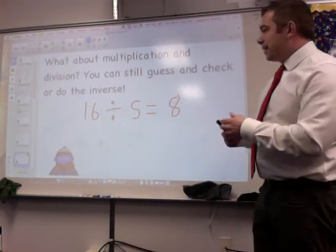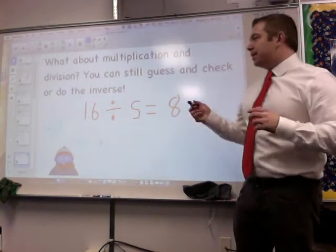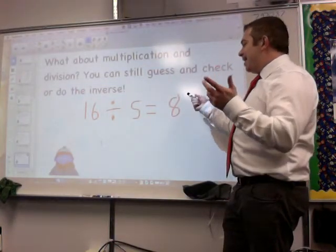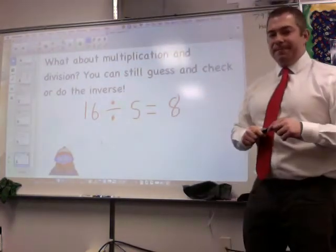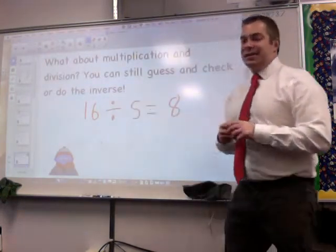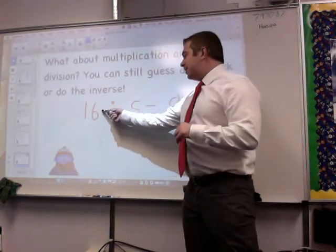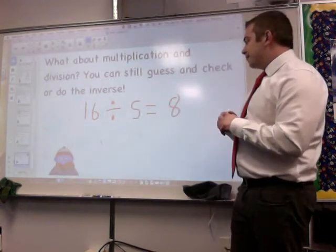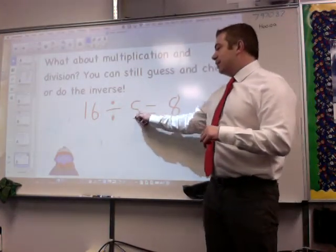You could also do inverse for multiplication and division. That's an s, that's not a 5. I know I got some sloppy handwriting sometimes. But if 16 divided by s equals 8, then 8 times whatever s is will equal 16. But I can't do, here's the big thing with division: I can't do 8 times 16 equals s. That is not true when you have division here.